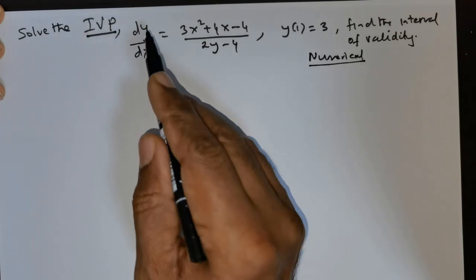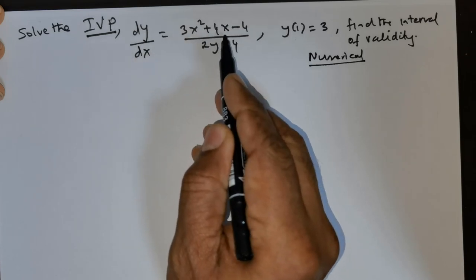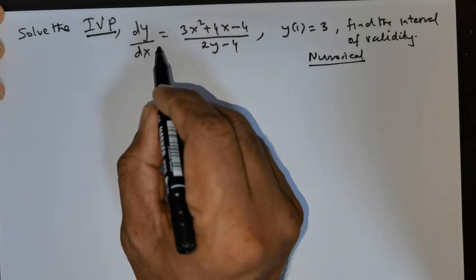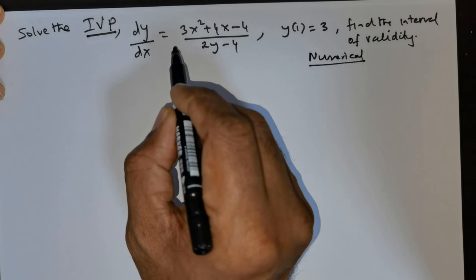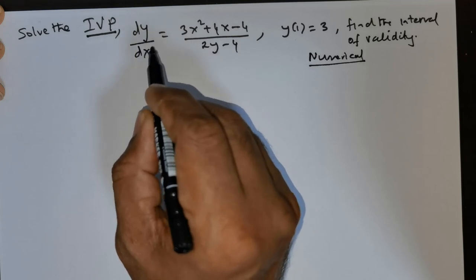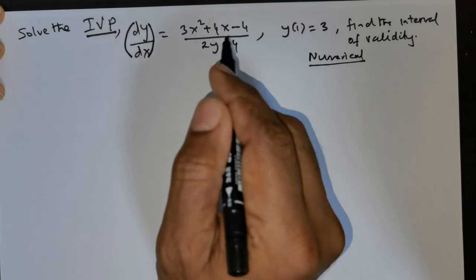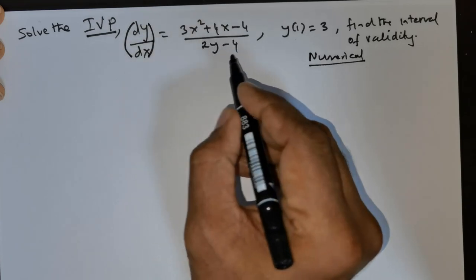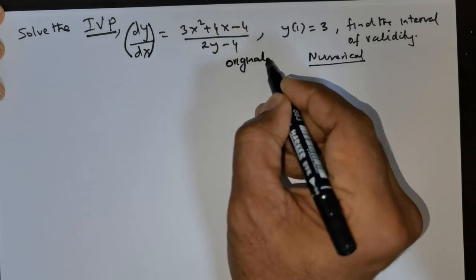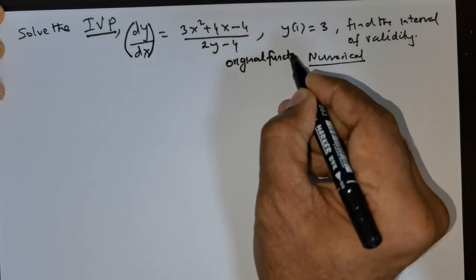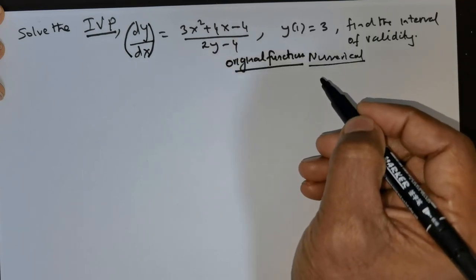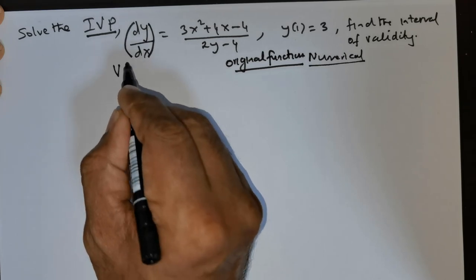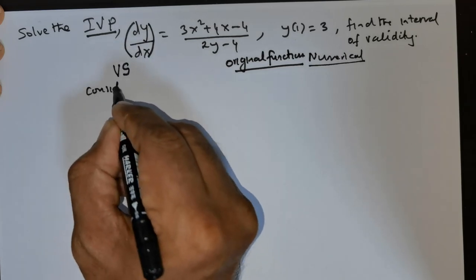We have been given dy/dx is equal to (3x² + 4x - y) divided by (2y - 4). Now they have given us the rate of change of the function — dy/dx is the rate of change. We are interested in the original function. So that is the objective — we have to get the original function. And the technique that lets us get the original function is called the variable separable method.